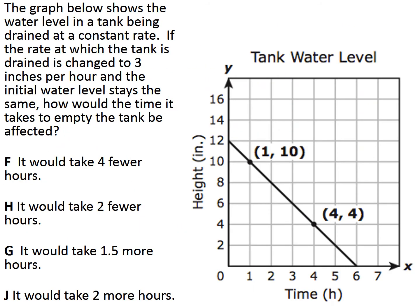We've got one last problem. The graph below shows the water level in a tank being drained at a constant rate. If the rate at which the tank is drained is changed to three inches per hour and the initial water level stays the same, how would the time it takes to empty the tank be affected? It would take four fewer hours? It would take two fewer hours? It would take one and a half more hours? Or it would take two more hours? Let's go back through and highlight the question: how would the time it takes to empty the tank be affected?